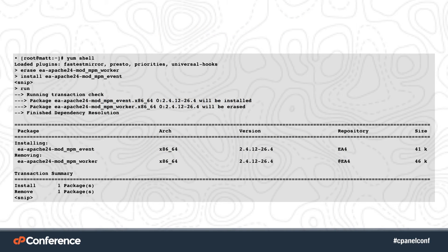Here's an example of a yum shell session. You just type yum shell, then type 'erase EA-Apache24-mod_mpm_worker', then 'install EA-Apache24-mod_mpm_event', and then type the command 'run'. You'll see in the table that it's both installing and removing an MPM for Apache in a single command. The reason this is valuable is that if we were doing this individually, we'd have removed the entire Apache stack and caused server downtime. Because of the hooks previously mentioned, cPanel will automatically be updated — a restart will be run, rebuildhttpd.conf, and quite a few other things that have to happen after Easy Apache runs.